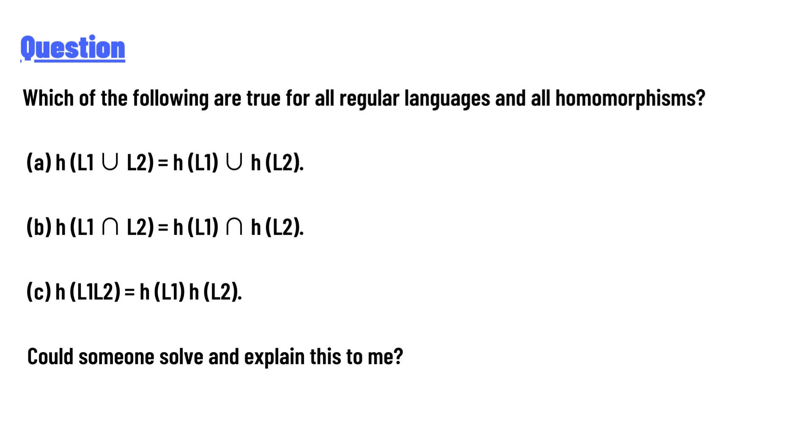Option B: h into L1 intersection L2 is equal to h into L1 intersection h into L2. Option C: h into L1L2 is equal to h into L1 h into L2. Could someone solve and explain this to me?